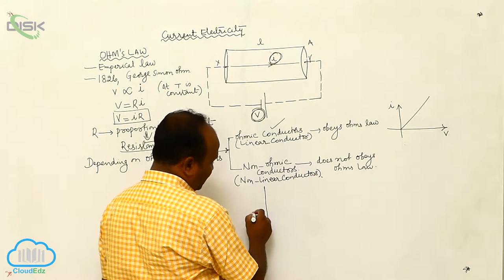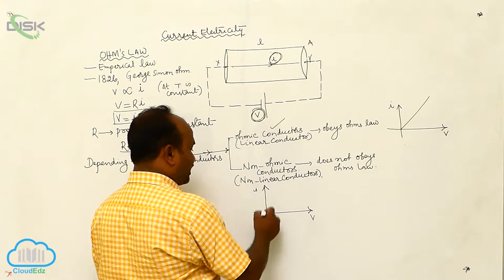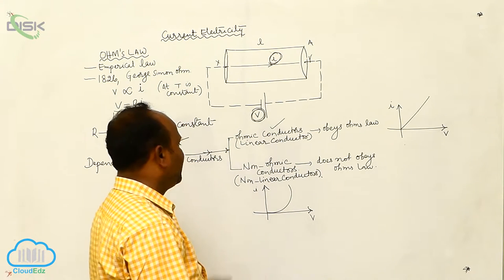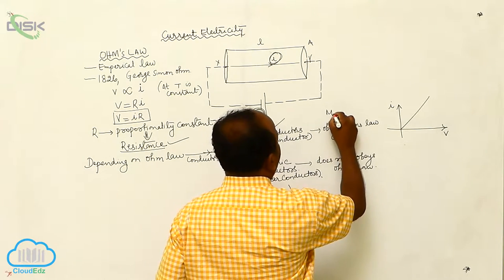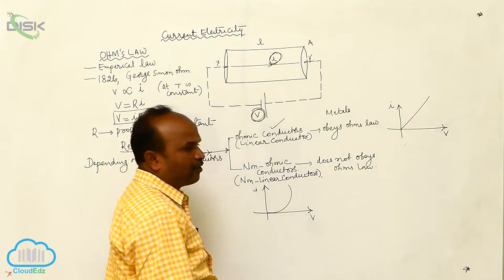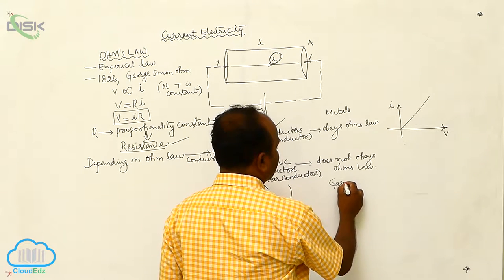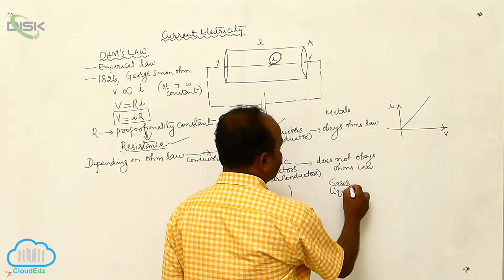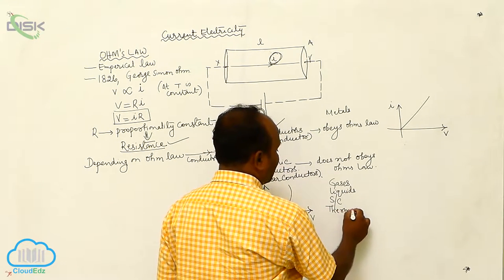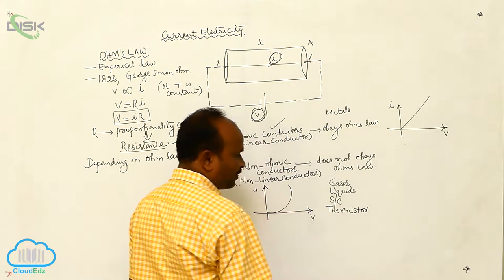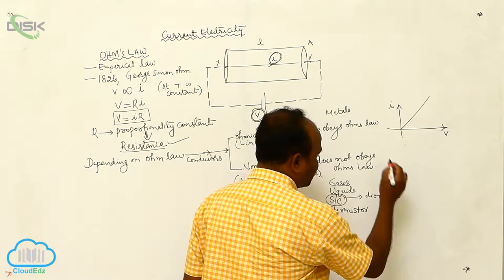For a non-ohmic conductor, the graph between potential difference and current may not be a straight line — the graph is curved. Examples of ohmic conductors are all metals. Examples of non-ohmic conductors include gases, liquids, semiconductors, and a thermistor.